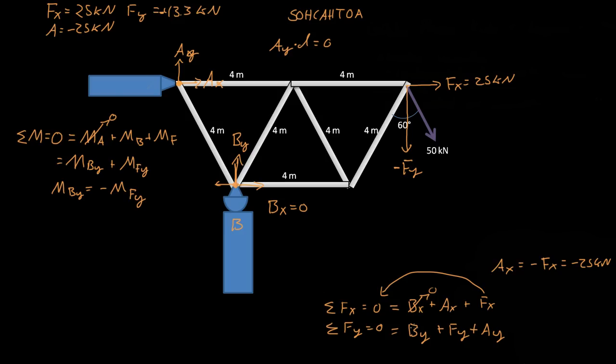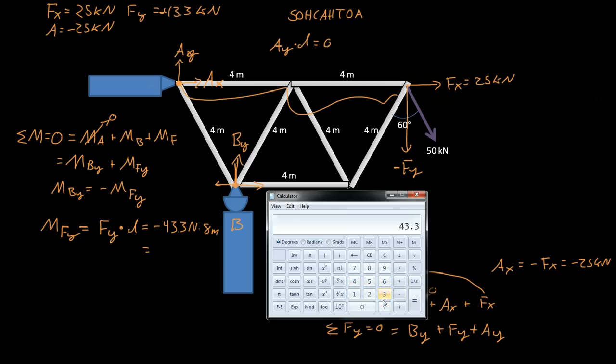So let's start off with finding the moment of Fy. So the moment of Fy is equal to the force of Fy times the distance, so the perpendicular distance which is eight meters. So then that is equal to negative 43.3 kilonewtons times eight meters. That gives us 43.3 times eight is equal to 346.4 kilonewton meters.